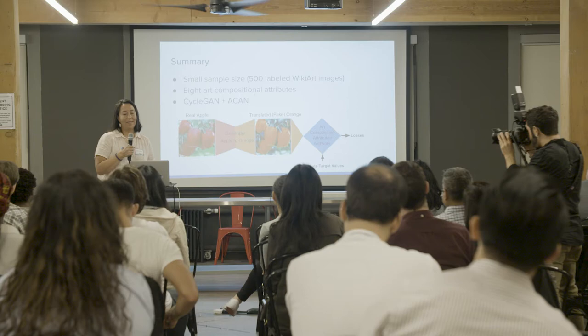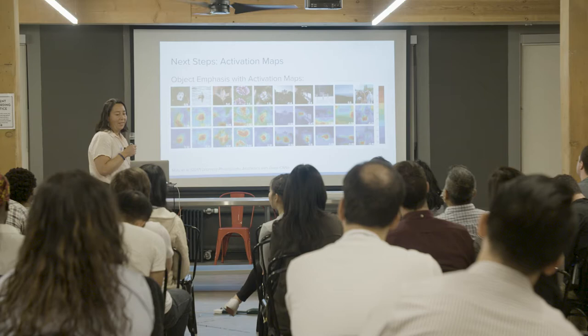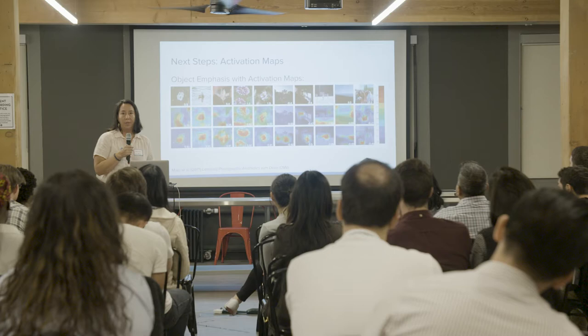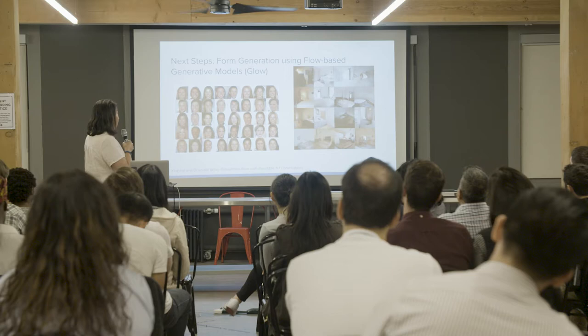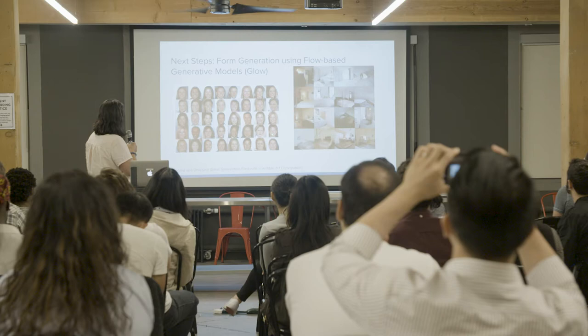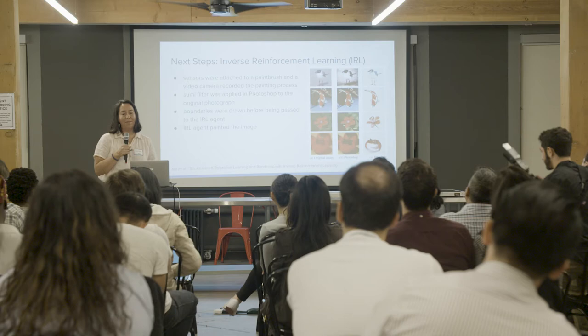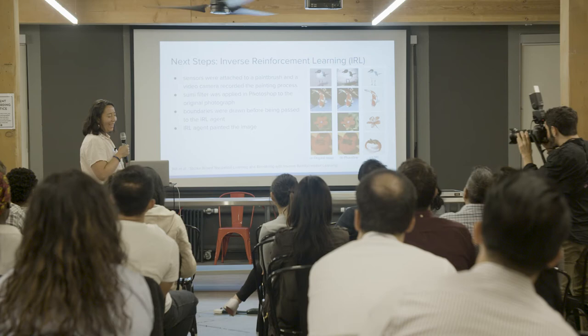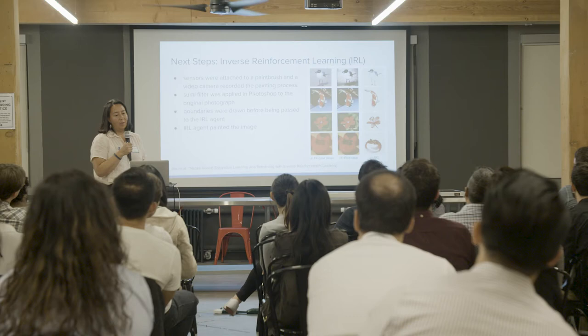Possible next steps would include applying activation mapping to understand how the different compositional attributes are working — here's an example from learning photography aesthetics from 2017. It would also be interesting to replace my CycleGAN network with other form generation strategies, like OpenAI's 2018 project GLOW, where they generated images of faces in bedrooms. Another cool project from 2015 had an IRL robotic agent generate actual physical paintings using inverse reinforcement learning.